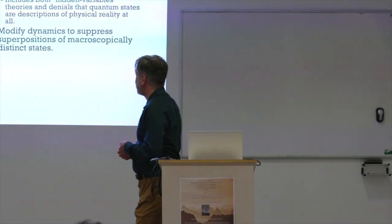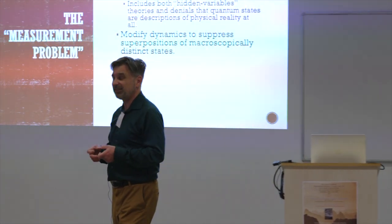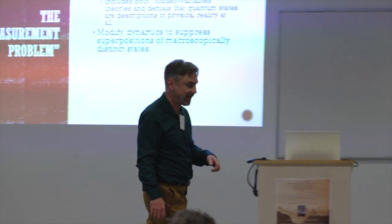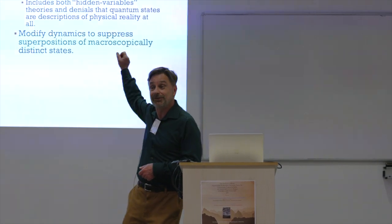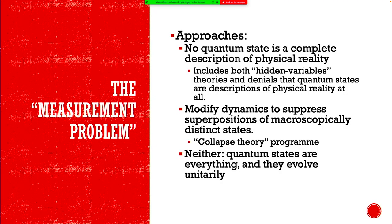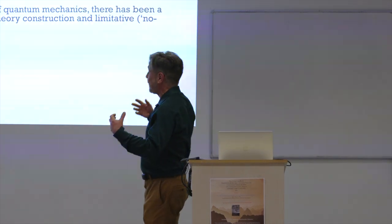Or you can modify the dynamics to suppress superpositions of macroscopically distinct states. So we've heard the last two talks were talking about that. These of course aren't exclusive. And then you can say reject both horns of Bell's dilemma and say quantum states are in fact everything and they evolve unitarily. And then you have to understand that. Some people would think that makes no sense and other people say no, that makes perfectly good sense. And I think if we look at what's happening, there's been a dialectic.